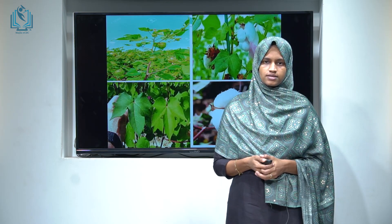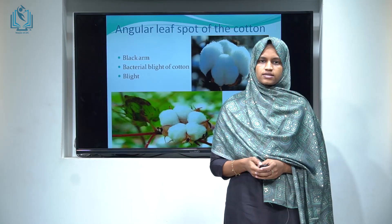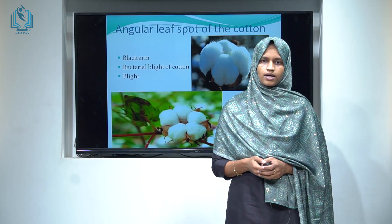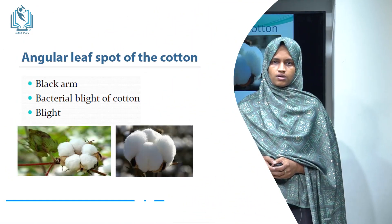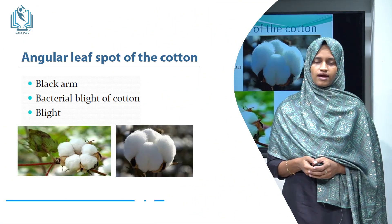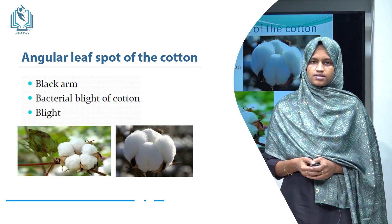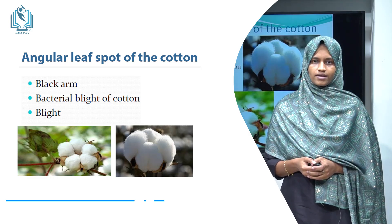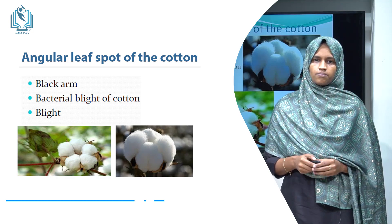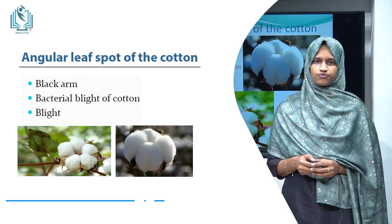The cotton plant contains bolls, and each boll consists of about 27 to 45 seeds. Angular leaf spot of cotton is one of the severe diseases of the cotton plant, affecting almost every cotton-growing country in the world. This disease is also called blackarm or bacterial blight of cotton. Blight means rapid browning of the tissue or rapid death of the plant.